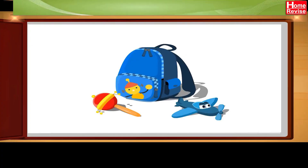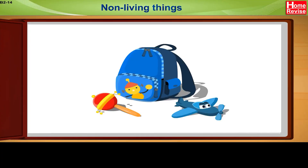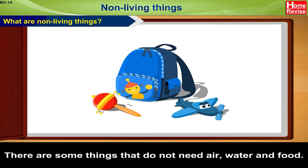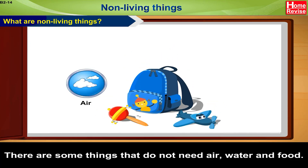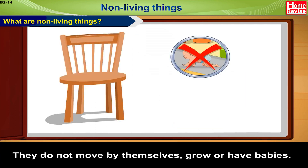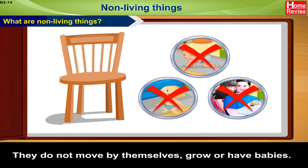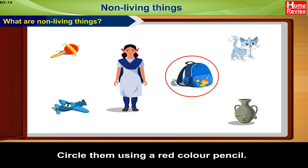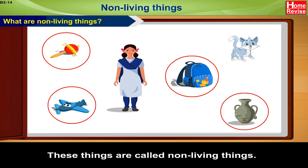Non-living things: what are non-living things? There are some things that do not need air, water, and food. They do not move by themselves, grow, or have babies. Some of them can be seen in the picture — circle them using a red colour pencil. These things are called non-living things.